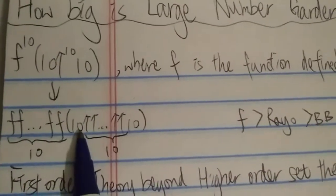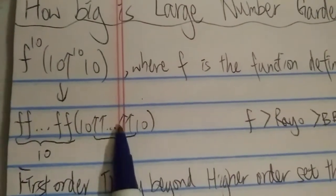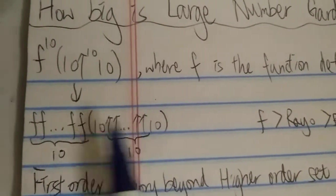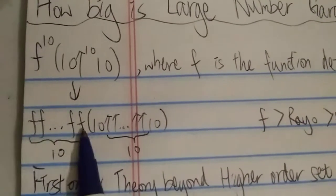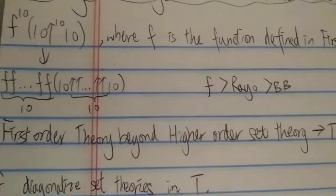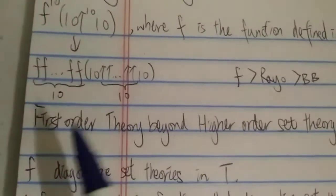Of course, Rayo's number at input is a Google, but this number here is way, way, way bigger than Google. And then for the f, you have to repeat f itself 10 times, and even just one f is much stronger than Rayo already.